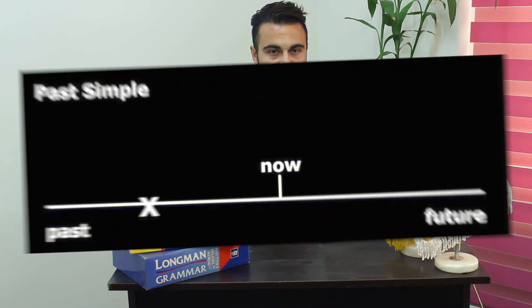We talked about Present Perfect and now we want to talk about Simple Past. Let's see how the timeline works and what the form is. This is the timeline — as you can see, the action happened in the past and it is over. And nothing from that comes to the present.